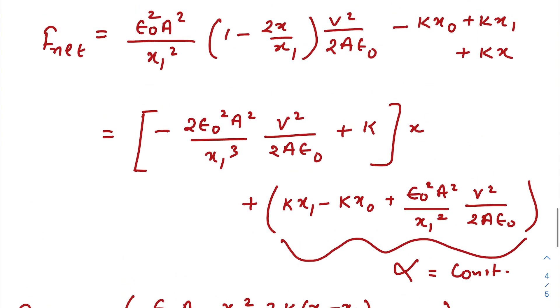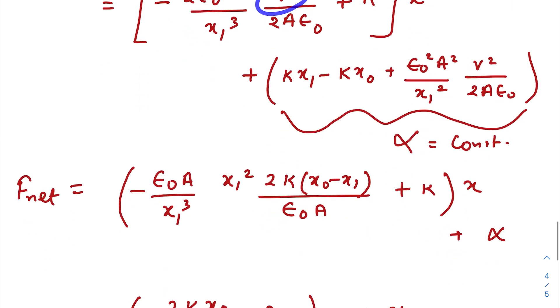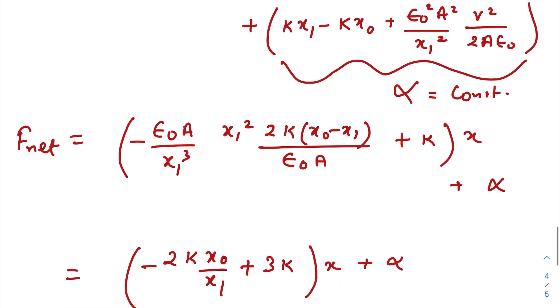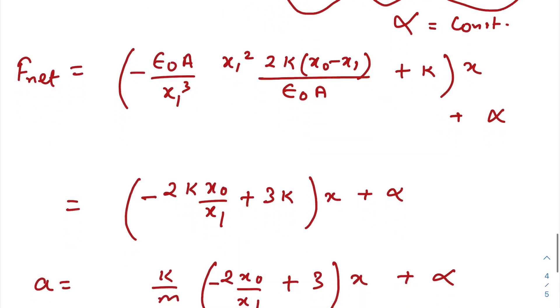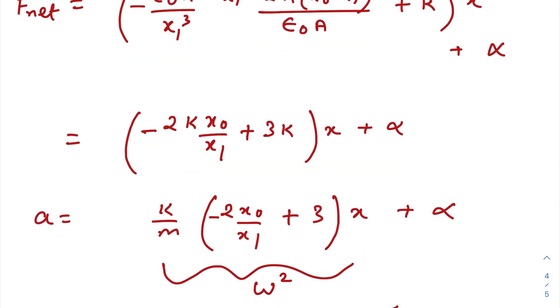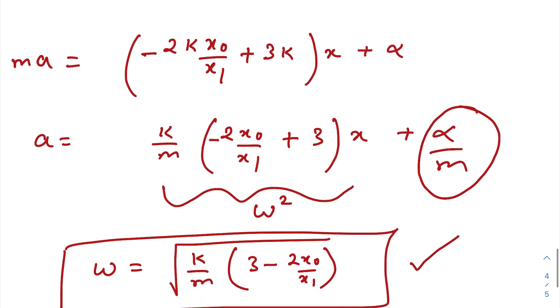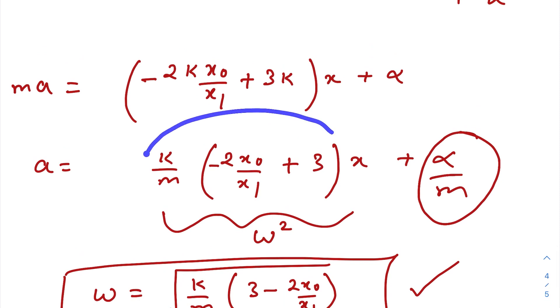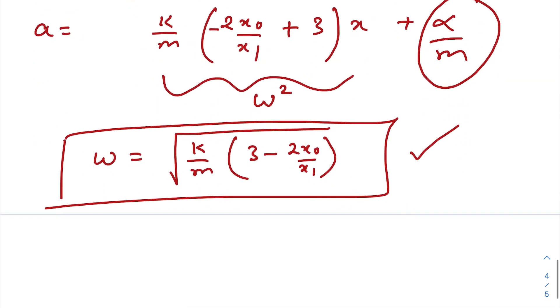Now what happens? Just put the value of V that you have got in your previous answer. Simplifying everything, you will get the coefficient of x as this one. Now F net can be written as mass times acceleration, so divide the whole thing with m. Now this thing is a constant, this is not very helpful for us. Now this coefficient of x is nothing but square of the angular frequency.